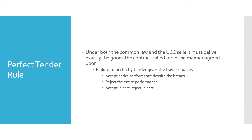Option one: the restaurant owner says, 'We contracted for the chickens to be here at noon, you're here at one, but I'm going to accept all 500 chickens anyway' — that's accepting despite the breach. Option two: 'We contracted for 500 chickens to be here at noon, you're here at one — take your chickens and leave.' That's rejecting the entirety of the performance, which the restaurant would be well within their rights to do — perhaps not the most prudent business move, but legally sound.